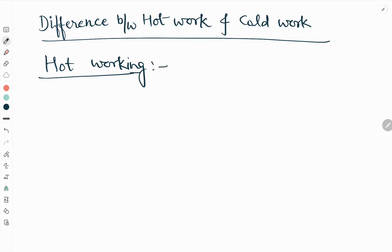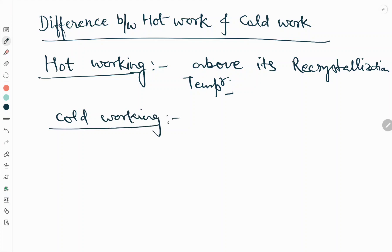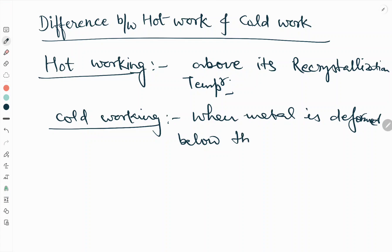Hot working occurs when metal is deformed above its recrystallization temperature. In contrast, cold working happens when metal is deformed below the recrystallization temperature.